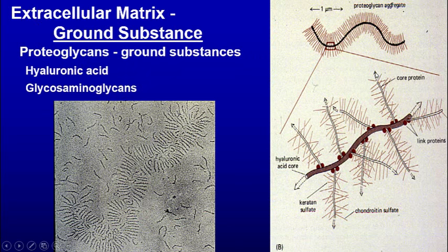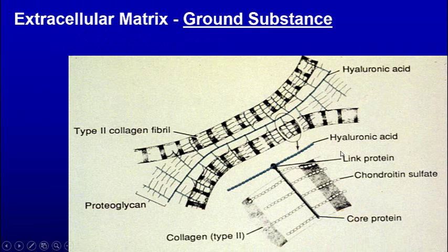You have a hyaluronic acid core, and then protein cores come up from that, and then you have chondroitin sulfate — different sulfates coming off of those. So this is the kind of structure you have: a hyaluronic acid core with glycosaminoglycans coming off of it. Type 2 collagen has periodicity, but it's not as obvious as in type 1.